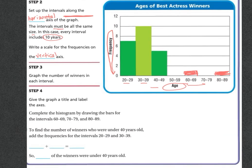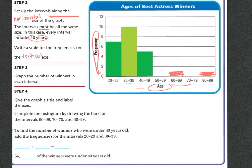Next, it has to give the graph a title and label the axes. So you can see that they did the title here. Ages of the Best Actress Winner. They labeled frequency. They labeled ages. And we've already completed the intervals for these.